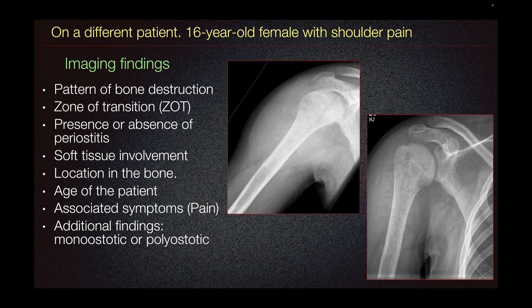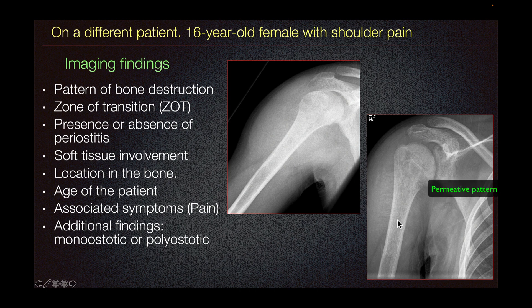On a different patient, a 16-year-old female with shoulder pain, when we look at an osseous lesion, we look at imaging findings that could suggest an aggressive or non-aggressive lesion. One of the things we look at is the pattern of bone destruction — it could be geographic, moth-eaten, or permeated pattern. A permeated pattern is poorly visualized and suggests an aggressive lesion, as does a moth-eaten pattern.